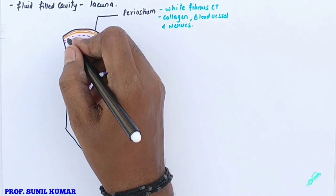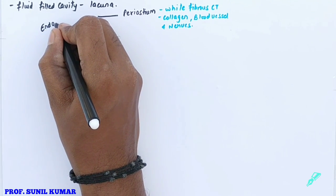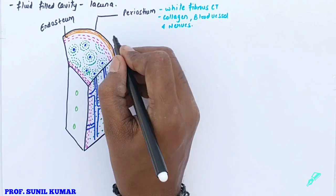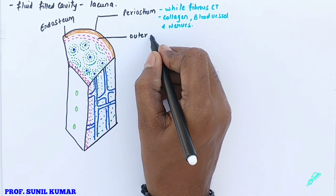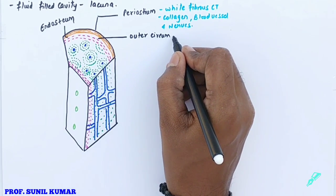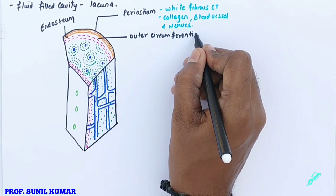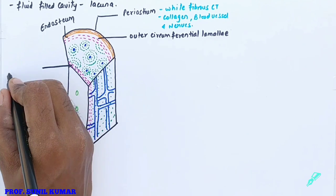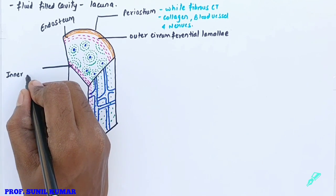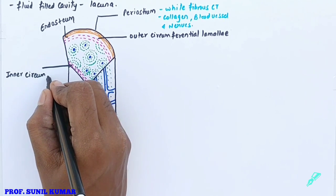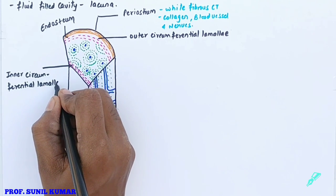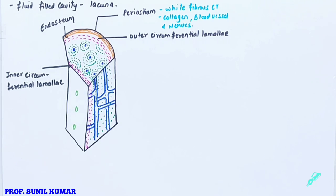The second point is the endosteum — the innermost layer of the bone, present inner to the periosteum. Then we have the outer circumferential lamella and inner circumferential lamella, which are on the circumference of the bone. Between the two there is the matrix.